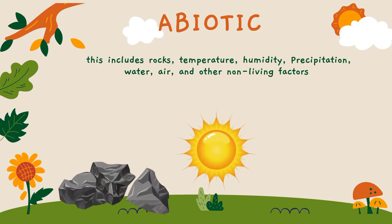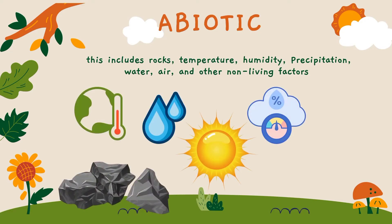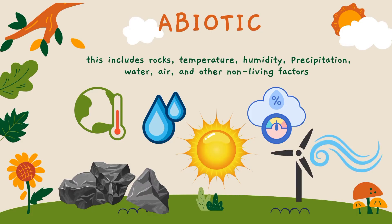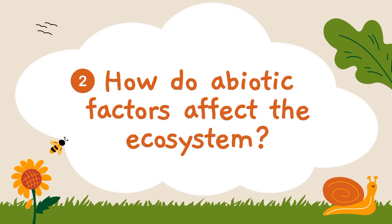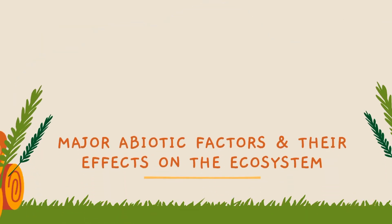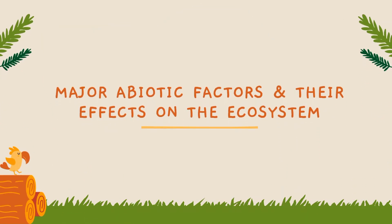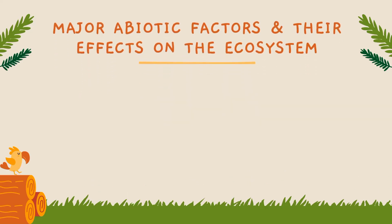Abiotic factors include rocks, temperature, humidity, precipitation, water, air, and other non-living factors. Now, how do abiotic factors affect the ecosystem? Let me present to you the six major abiotic factors that play a significant role in our ecosystem.